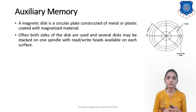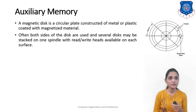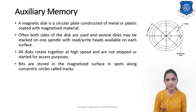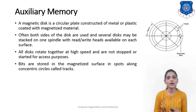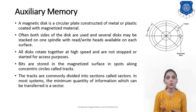Often both sides of the disc are used, and several discs may be stacked on one spindle with a read/write head available on each surface. All of the discs rotate together at high speed and are not stopped for access purposes. Bits are stored in the magnetized surface in spots along concentric circles called tracks. The tracks are commonly divided into sections known as sectors.